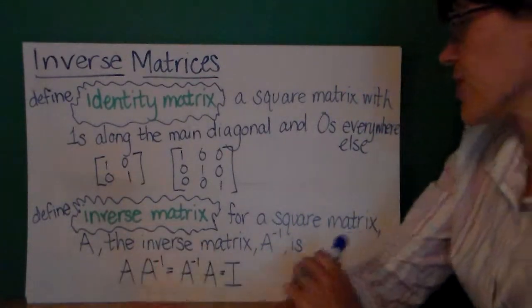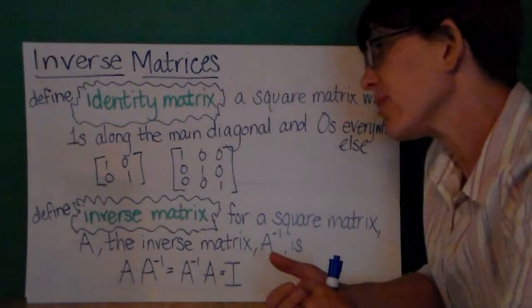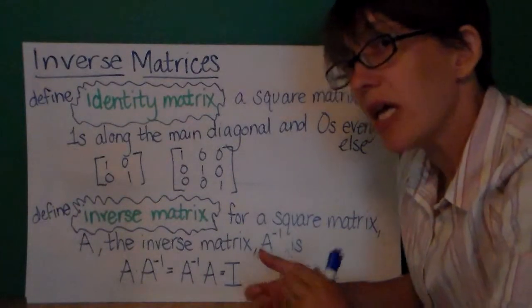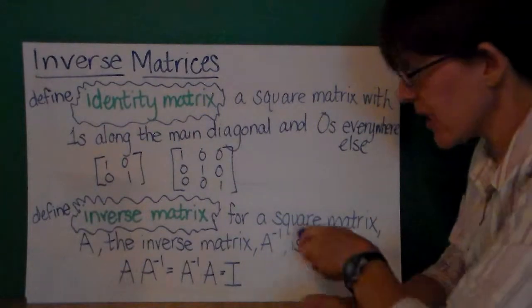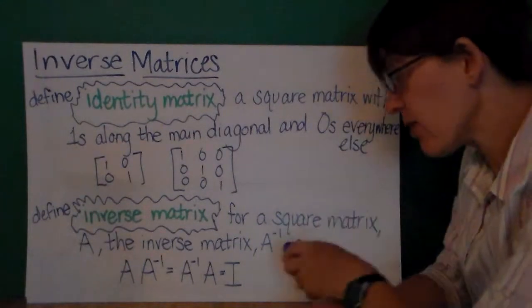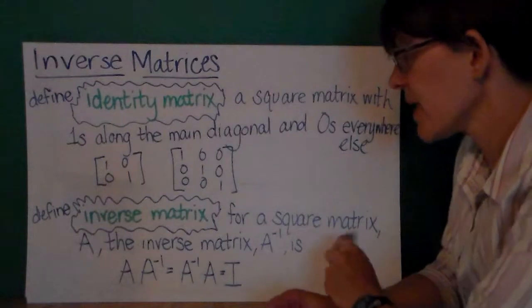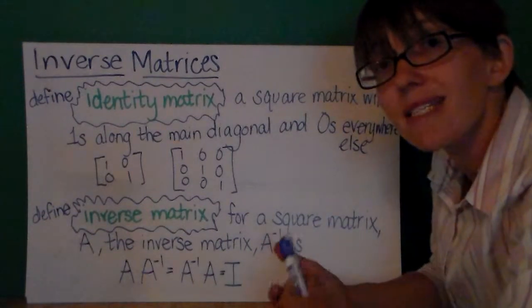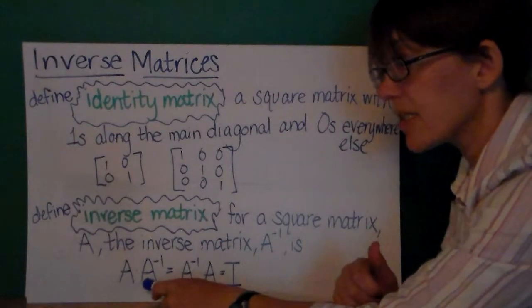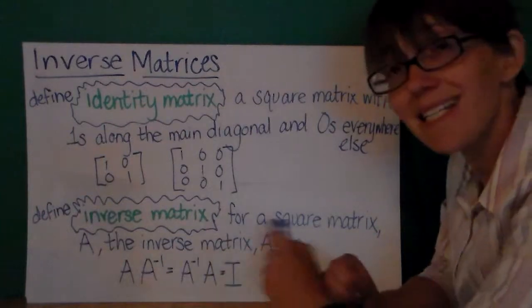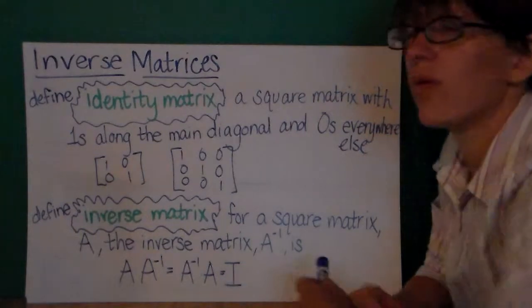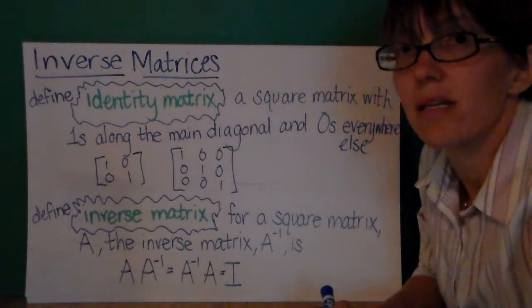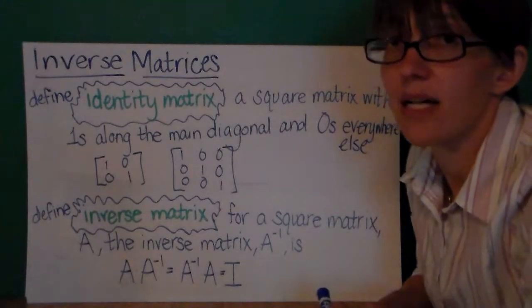An inverse matrix. An inverse matrix is for a square matrix A. The inverse matrix, notated like this, A, looks like to the negative 1 power but it's read A inverse, is a matrix such that A times A inverse is equal to A inverse times A is equal to I, the identity matrix of the same size.